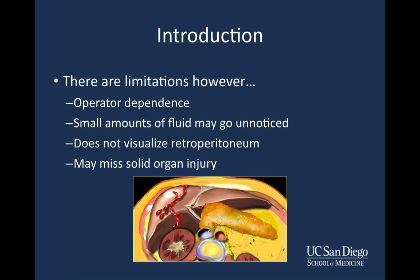First, there is operator dependence, though as part of this lecture series and your training in residency, you'll get better and overcome some of that. Even in experienced hands, small amounts of fluid may go unnoticed. It's going to take at least 200 to 300 milliliters of free fluid in the peritoneum before you're likely to see it on ultrasound — that's roughly one unit of blood — so it has to be a fair amount before you'll actually visualize it.